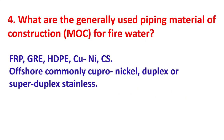What are the generally used piping materials of construction for fire water? The commonly used materials are FRP, GRP, HDPE, Cu-Nickel, CS. Offshore, commonly used materials include Duplex or Super Duplex Stainless Steel.